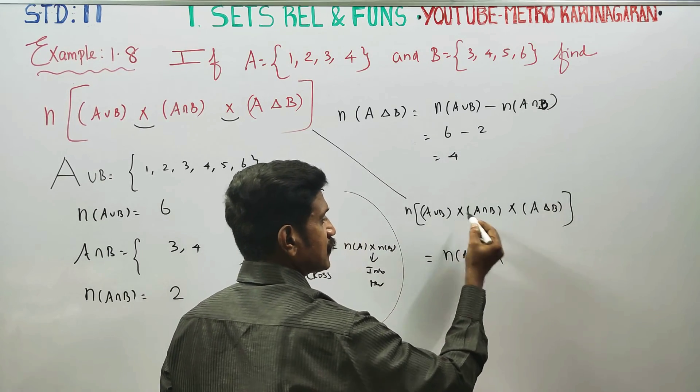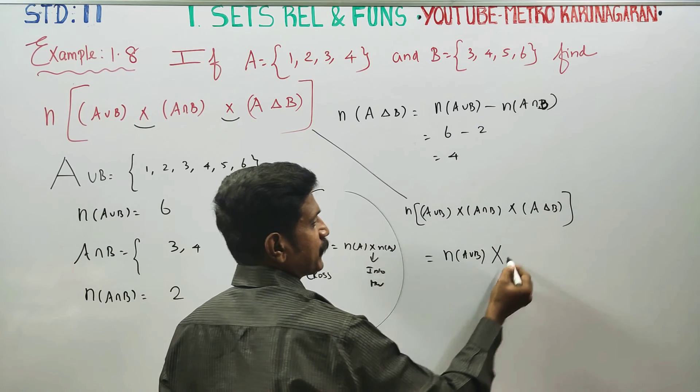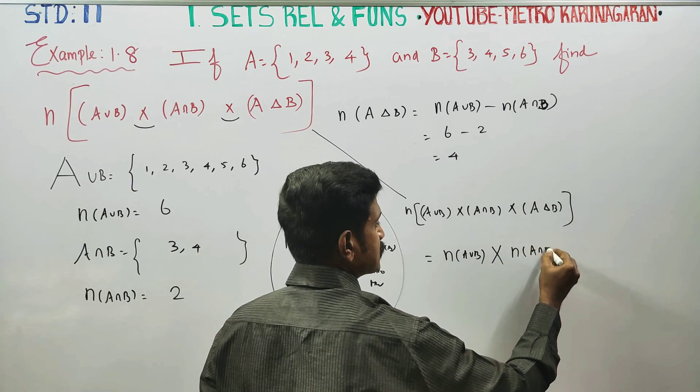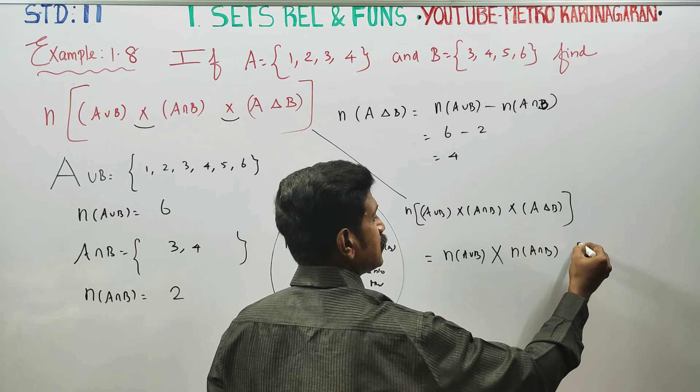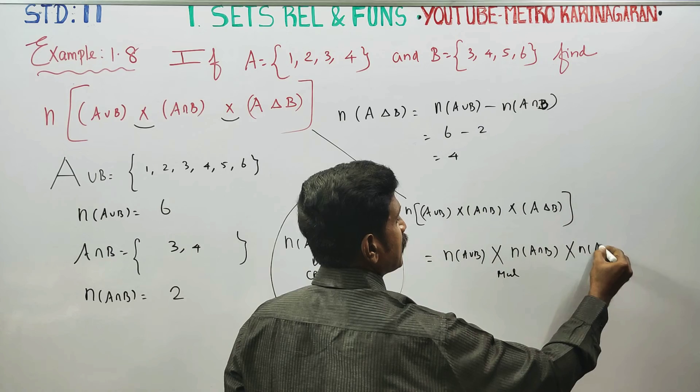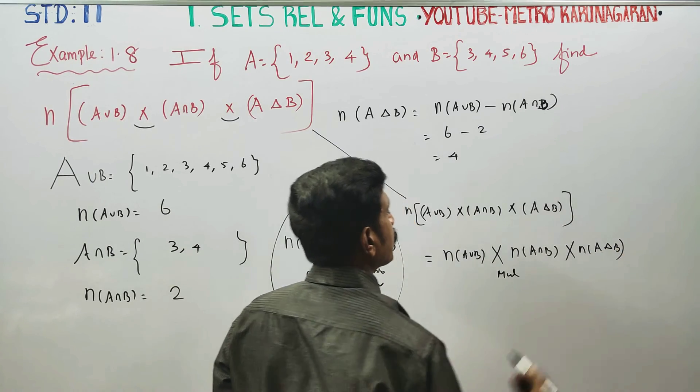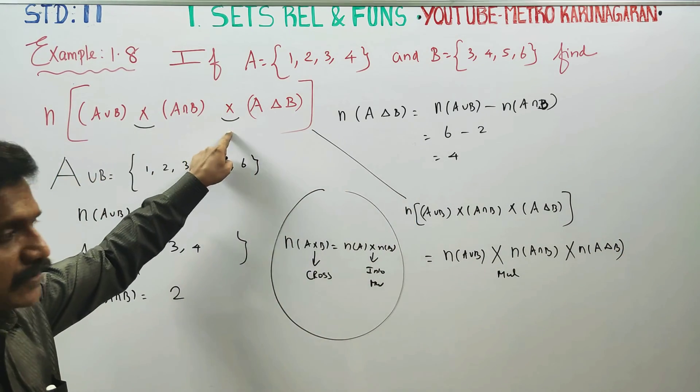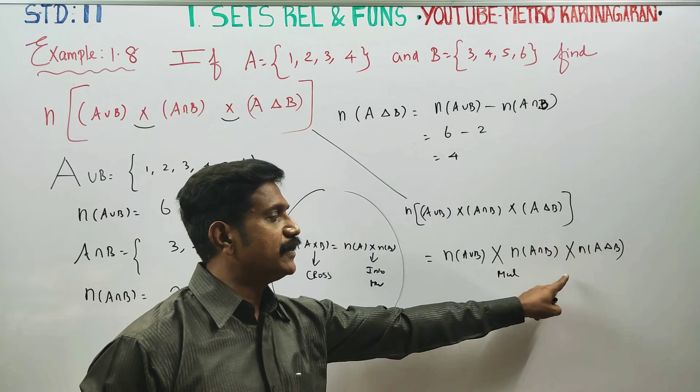This is cross multiplication: n of A delta B, it is cross into multiplication.